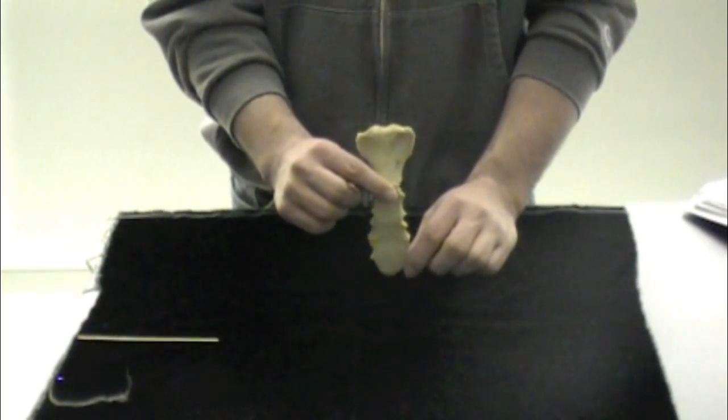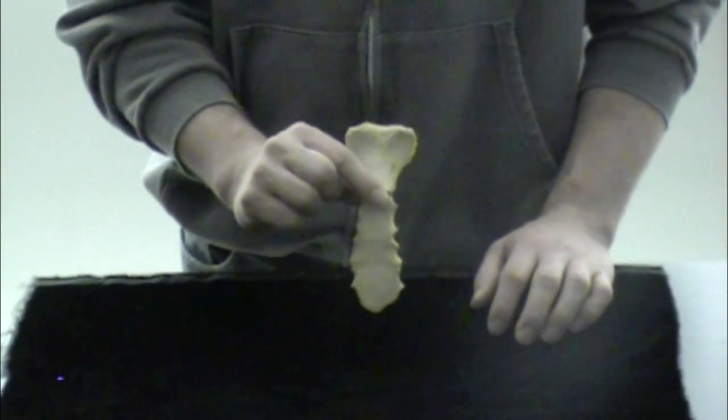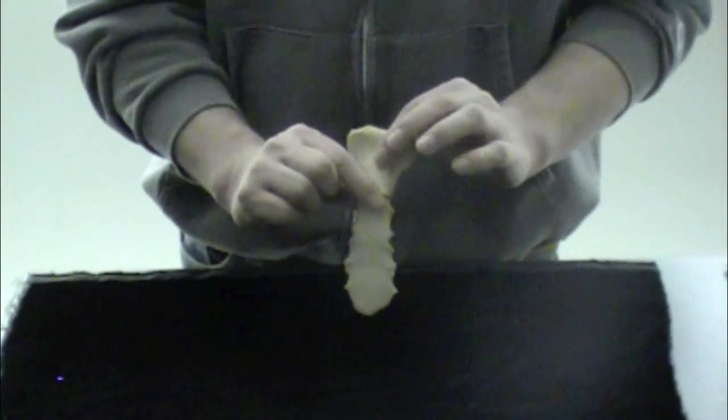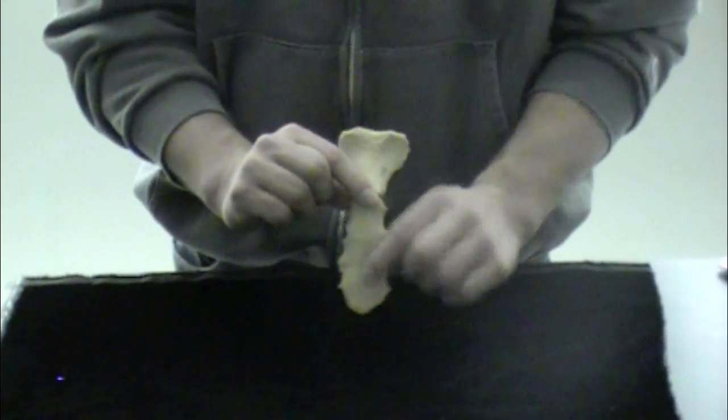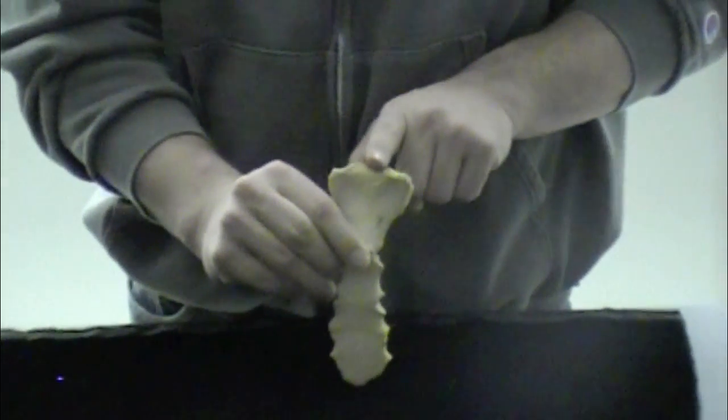Now we'll take a more in depth look at the sternum. The only things that you need to know on this part of bone is going to be the manubrium, the body, that xiphoid process that's missing, and then up here, the sternal notch.